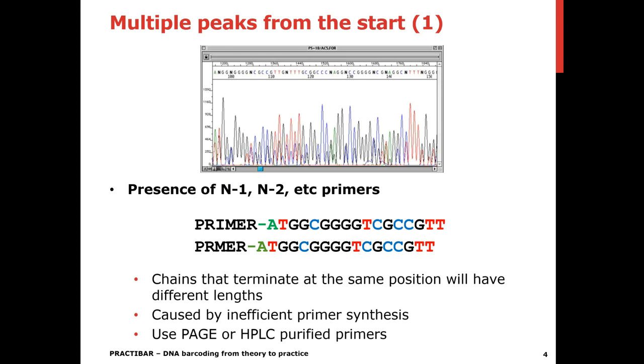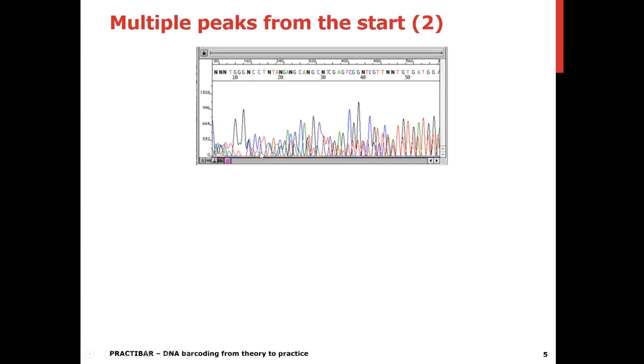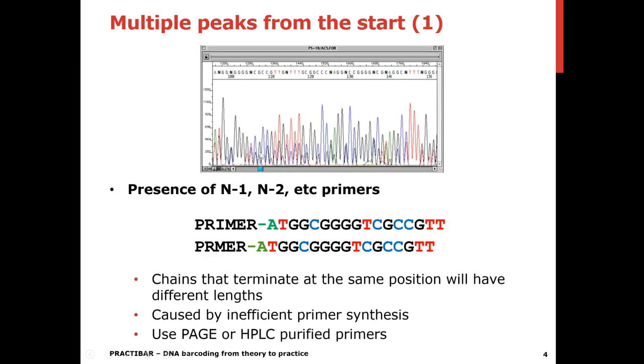So the chains that terminate at the same position will have different lengths. And so what you see then, you get a kind of echo signal. Because here you get an A signal, but you also get a little bit of B signal. And here you have the T and the G. Basically you see a kind of echo coming off. So you have here the T, the red T, but also the T right there. The blue C right there, but also the C here.